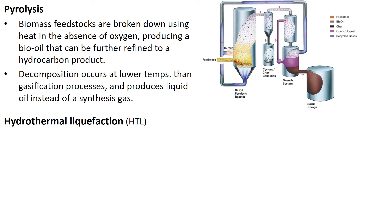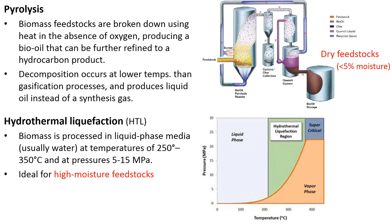On the other hand, HTL is ideal for high moisture feedstocks such as algae, duckweed, and sludge, which can be processed in liquid phase media at low temperatures and pressures of 5 to 15 MPa.